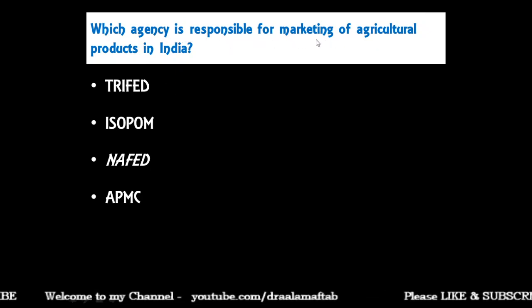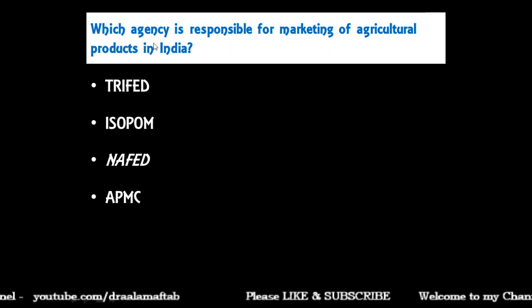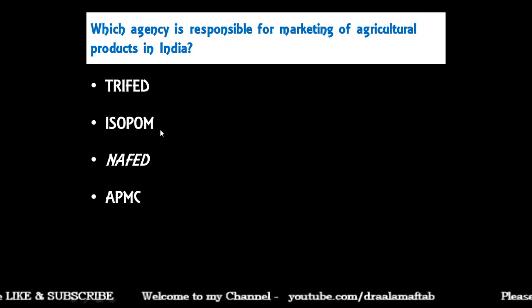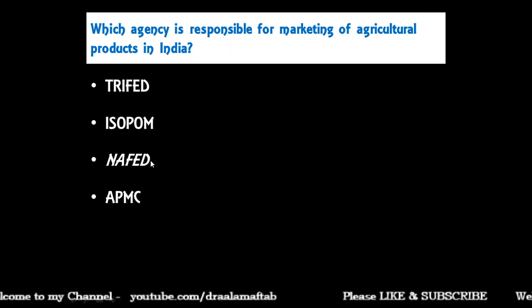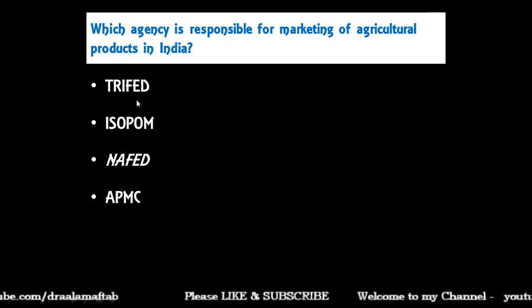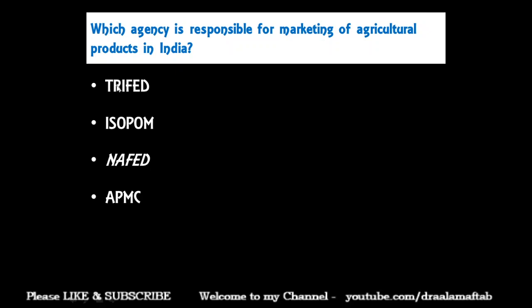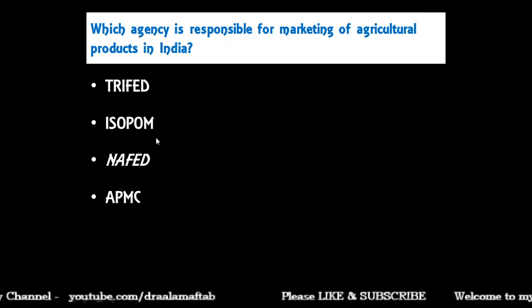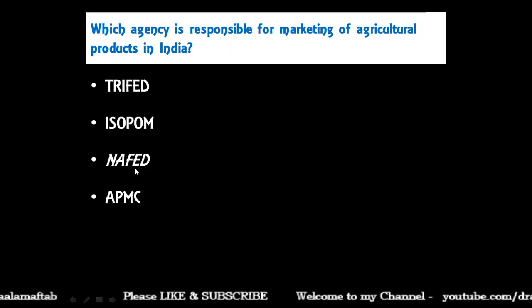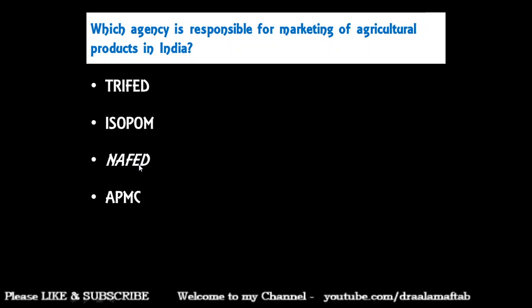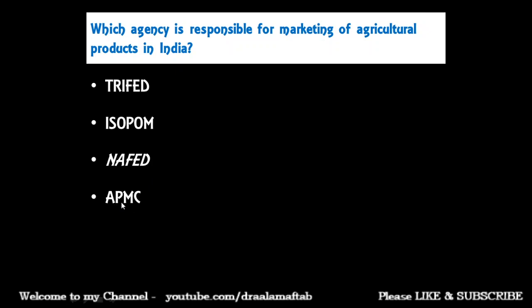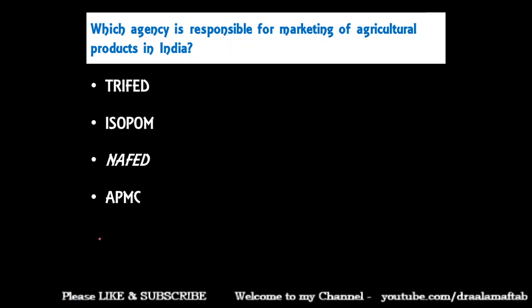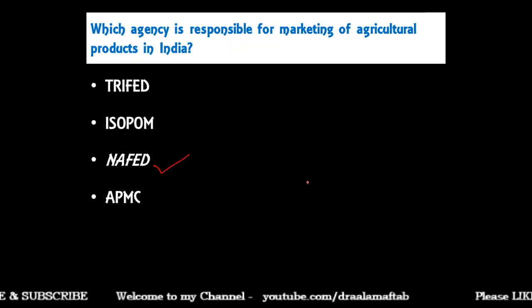Which agency is responsible for marketing of agricultural products in India? TRIFED, ISOPALM, NAFED, or APMC? The correct answer is NAFED. TRIFED is the Tribal Co-operative Marketing Development Federation of India, established in 1987. ISOPALM is the Integrated Scheme of Oilseed Pulses Oil Palm and Maize. NAFED is the National Agriculture Co-operative Marketing Federation of India, established in 1958. APMC committees are established by state governments.